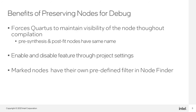At a high level, marking a node to be preserved for debug forces Cordis to maintain visibility of the node throughout the compilation. This means the node will exist in the post-fitting netlist with the same name that it holds in the pre-synthesis netlist. Essentially, this equates to turning off some of the potential compilation optimizations on the specified nodes. Additionally, users can easily enable and disable the feature throughout their project settings to avoid needing to manually unmark any of the nodes they have preserved for debug.